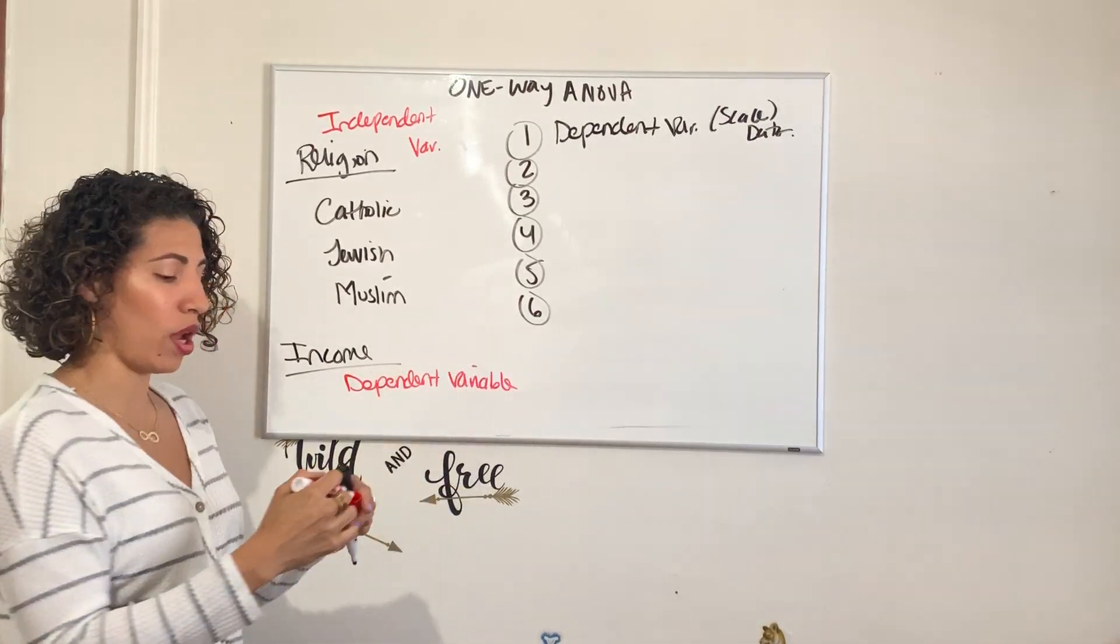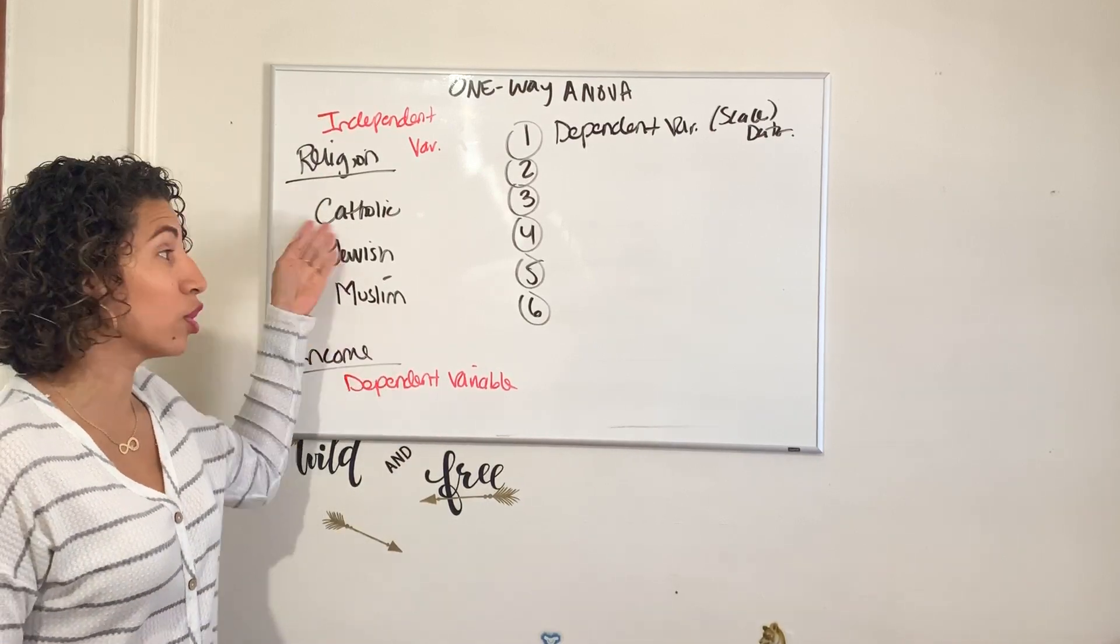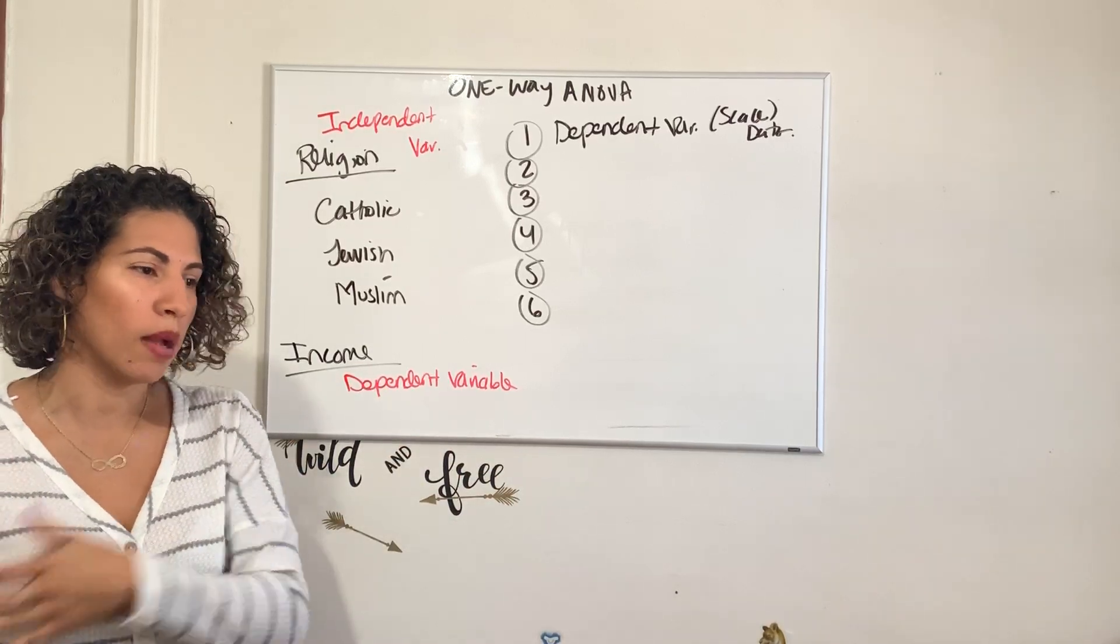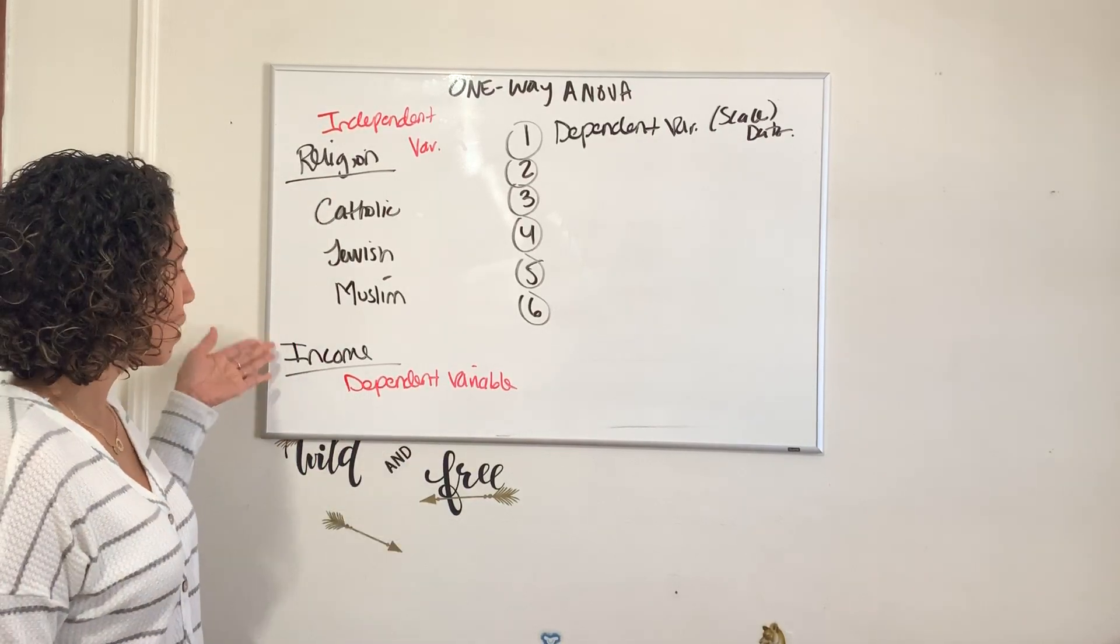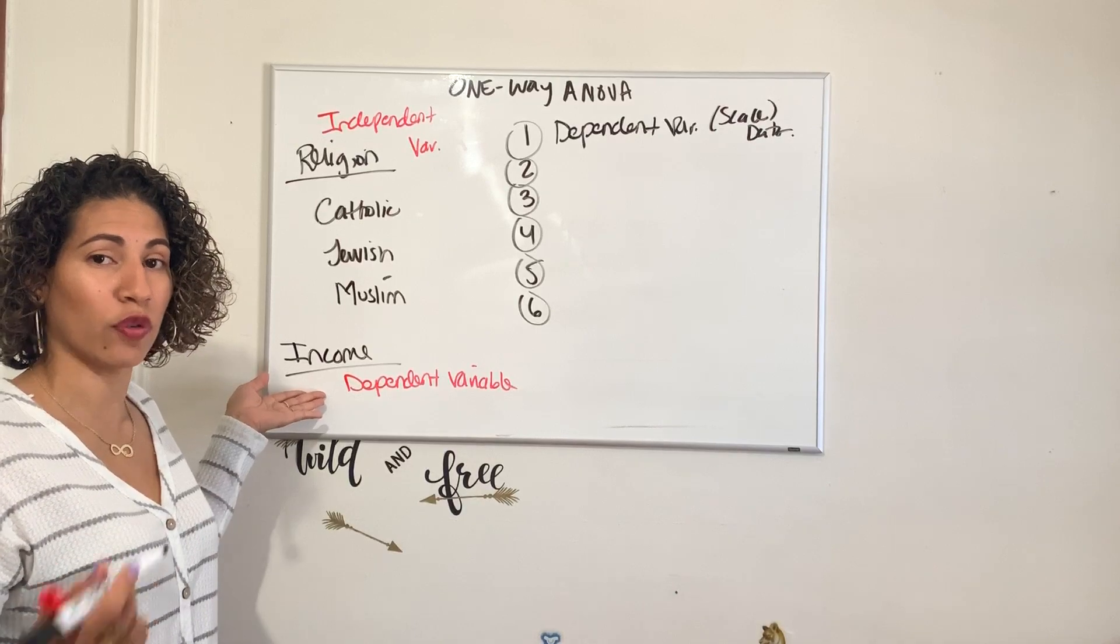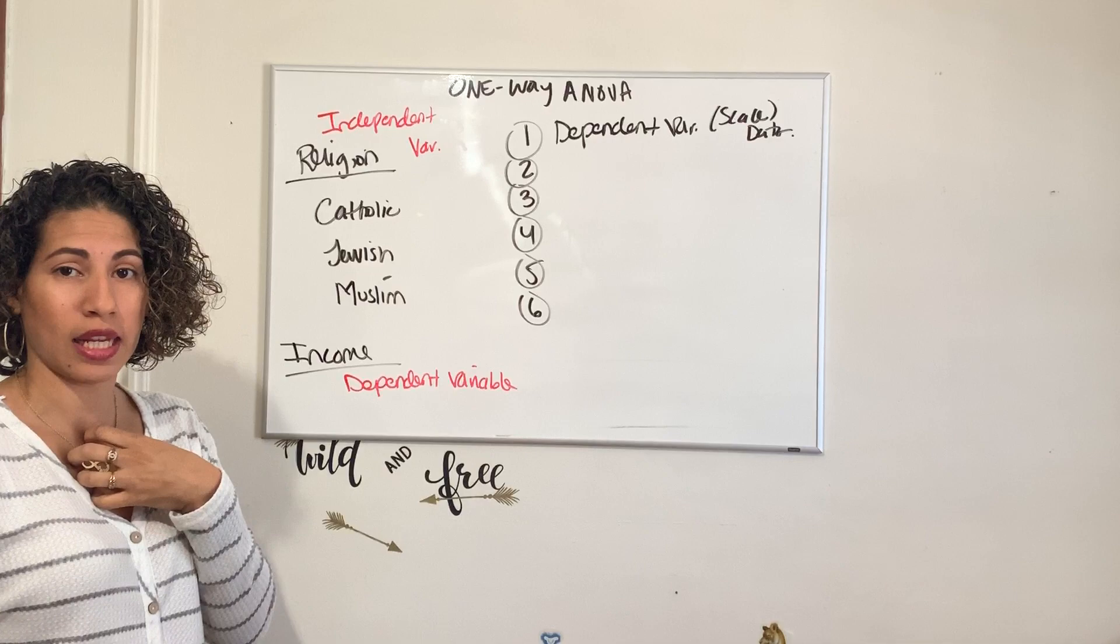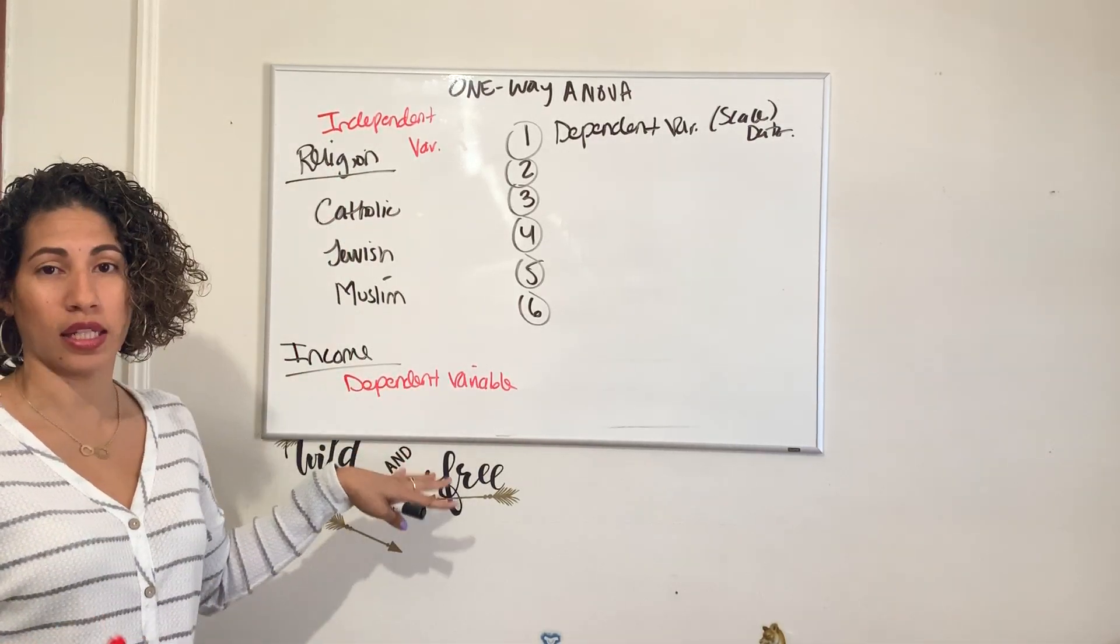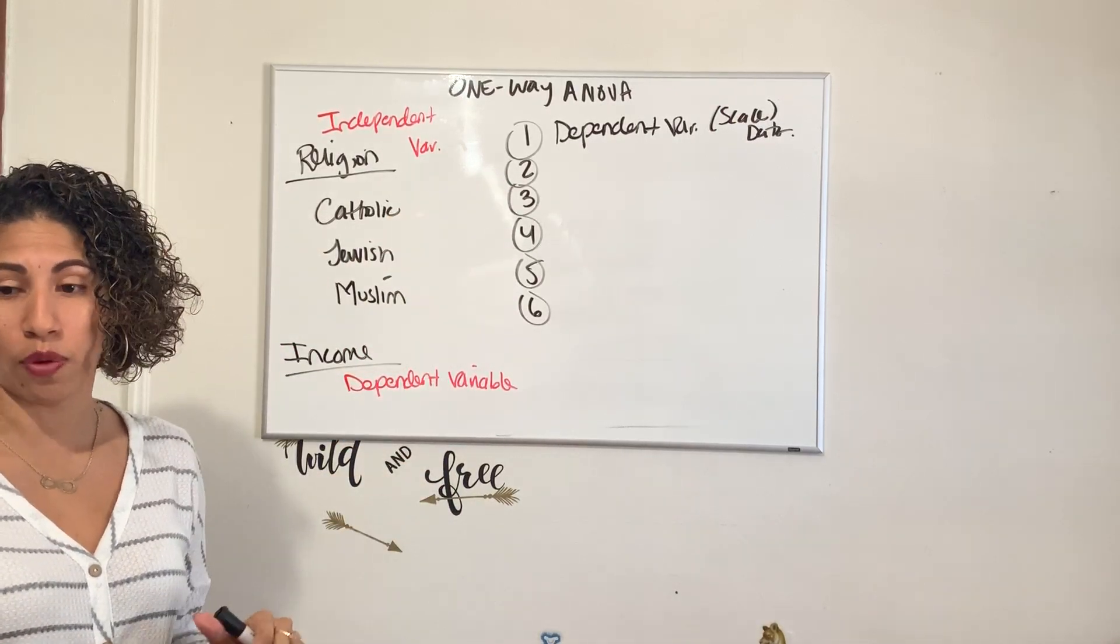In the one-way ANOVA, you're going to have an independent variable that is nominal or categorical. It's going to create your three or more groups. In reality, it's usually three or more because with two, you could do an independent t-test. Your dependent variable is scale data, interval or ratio, that leads to numbers essentially. Once we realize we have our independent and dependent identified and our first assumption - our dependent variable is scale - it leads us to our second one.